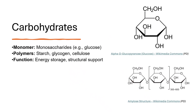Carbohydrates are sugars and starches. Their monomers, like glucose, are quick energy sources. When linked into polymers such as starch or glycogen, they store energy. In plants, cellulose provides structural support in cell walls.